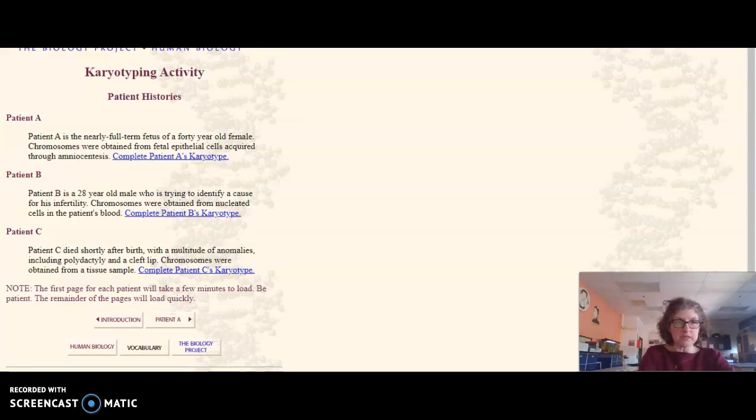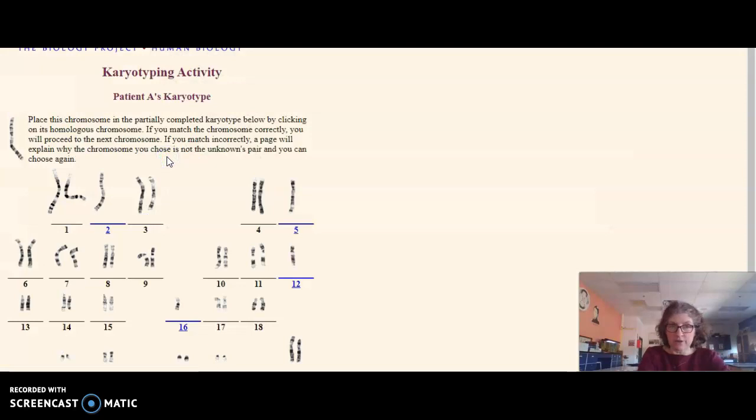When you open the website, you get this karyotype activity and these patient histories: patient A, patient B, patient C. The first thing to do is click on the patient A karyotype, and they'll give you all of these chromosomes. But you'll notice there are chromosomes missing, and they want you to finish it.